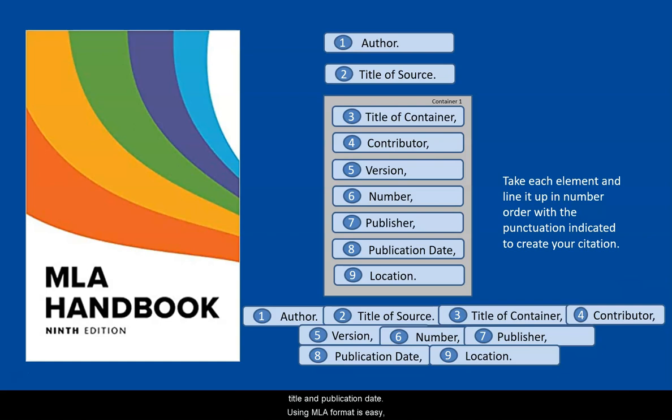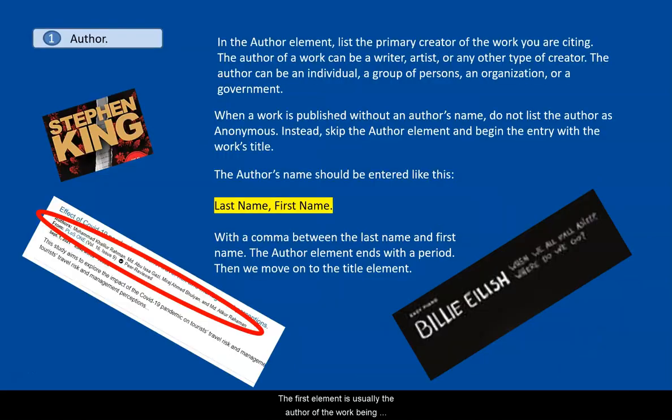Using MLA format is easy. First you find out these facts about what you're citing, and then use the template to put them in the proper order. The first element is usually the author of the work being cited. If there is no author, the first element is the title.